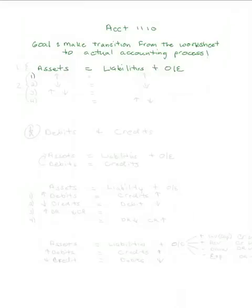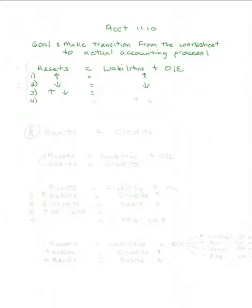There were four possibilities. The first is that assets could go up while liabilities and owner's equity could go up. The second possibility was that assets could go down and something on the other side — liabilities or owner's equity — could go down. The third possibility is that one asset could go up and another could go down, and you would still be in balance. The fourth possibility is that one item on the liability and owner's equity side could go up while something else on that side could go down, leaving the total unchanged.